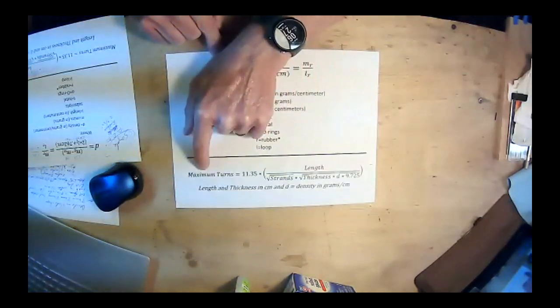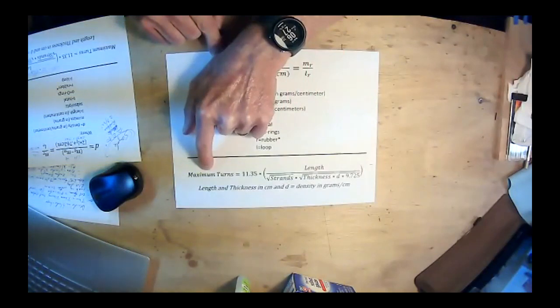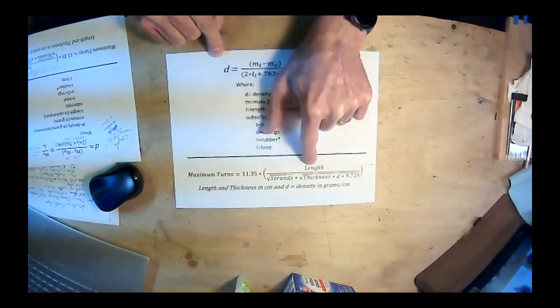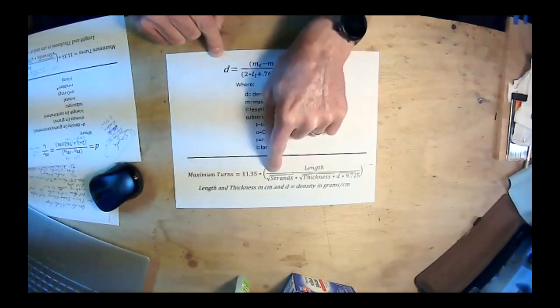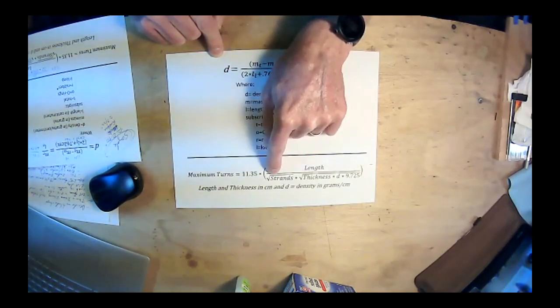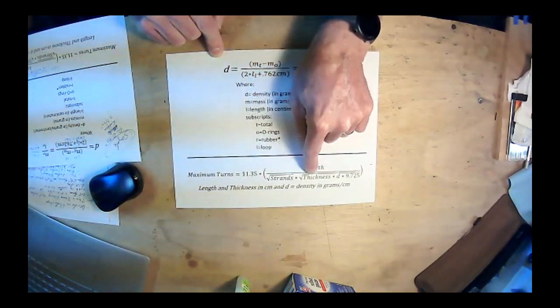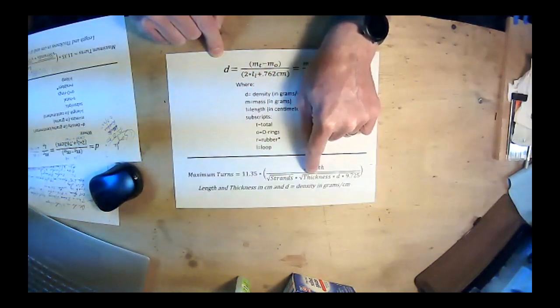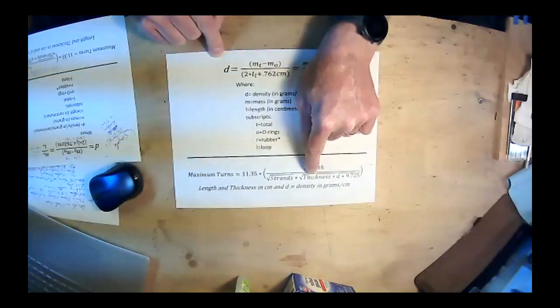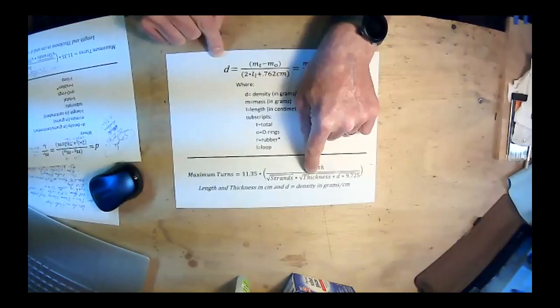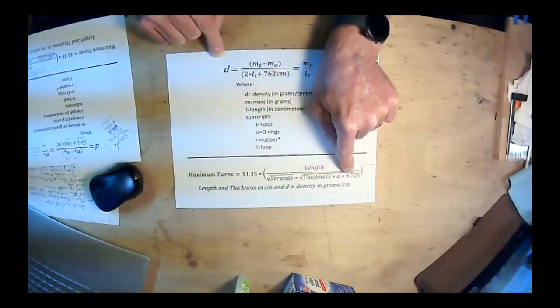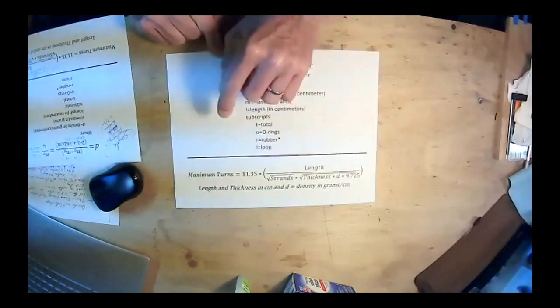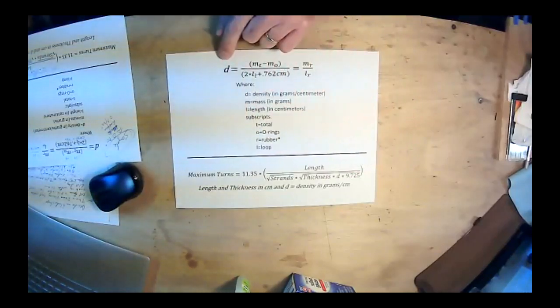So the maximum turns that Tan Supersport rubber will typically take before it breaks is 11.35 times the length of the loop divided by the square root of the number of strands. So in a single loop, that's two strands, times the square root of the thickness. The thickness is always the same. We figure that's a manufacturing standard. It's 0.04 inches thick, that's one millimeter. So one millimeter thick times the density times 9.725 inches.